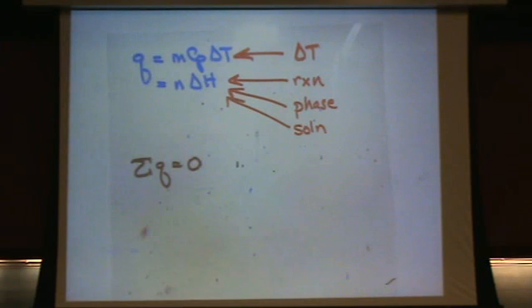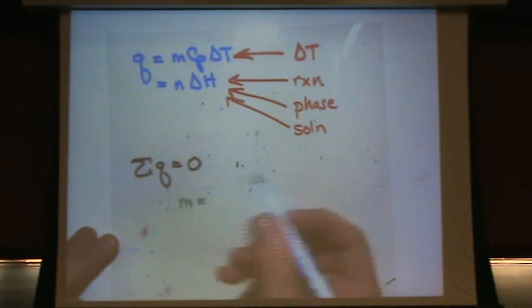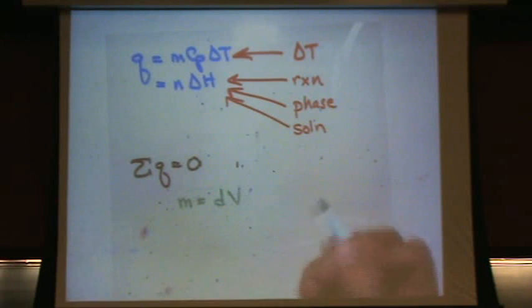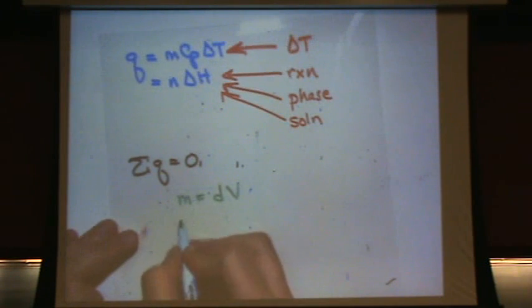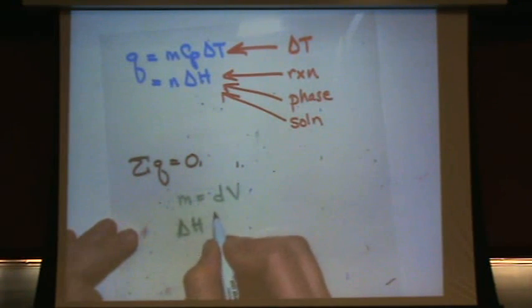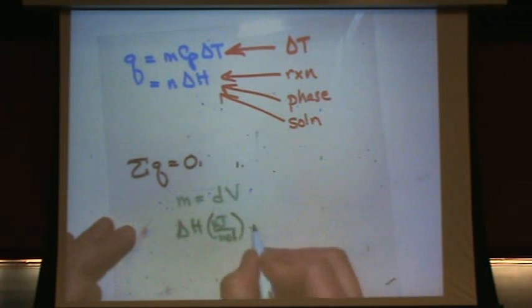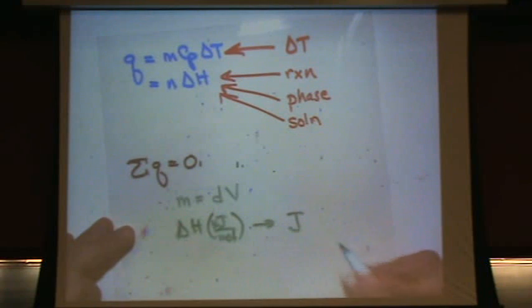A couple tricks to these. For M, this mass, often you're given the density and the volume. You need to multiply. So that's one trick.